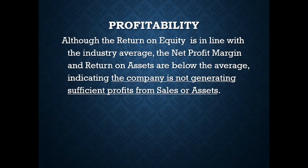For profitability: ROE was neutral with respect to the industry average, but net profit margin and ROA were below average. So we build the case that the company is not sufficiently profitable. Although the ROE is in line with the industry average, the net profit margin and ROA — and it's fine to use those well-accepted abbreviations in a write-up — indicate the company is not generating sufficient profit from sales or assets.